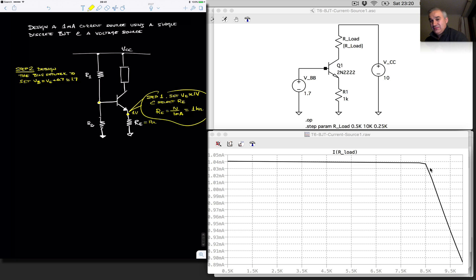Effectively, we are creating a source. We want our base to be at 1.7 volts. And so, for this to work, effectively, what we need to do is that we are selecting R1 and R2.